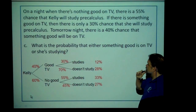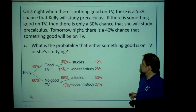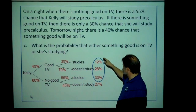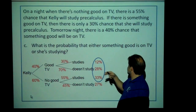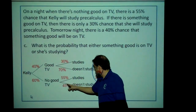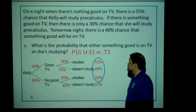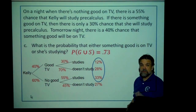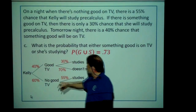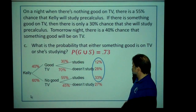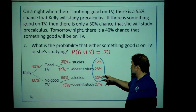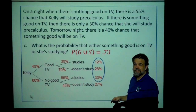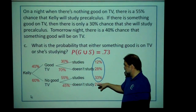Question C: what's the probability that either something is good on TV or she's studying? This is the probability of good TV or she's studying. It's going to be everything except no good TV and she's not studying. That's 27%, which means these must add up to 73%. So the probability that there's good TV or she is studying is 73%. We can also do this by saying probability of good TV, 40, plus the probability that she's studying, 45, minus the 12 — the probability that she's doing both. But it's easier just to do 1 minus 27%.